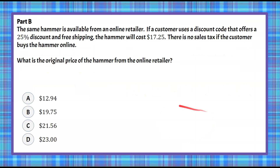Here's Part B. The same hammer is available from an online retailer. If a customer uses a discount code that offers a 25% discount and free shipping, the hammer will cost $17.25. There's no sales tax if the customer buys the hammer online. We're asked: what is the original price of the hammer from the online retailer? Please pause your video now, do your best work, and then come back to see the solution.